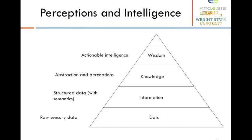This is called the DIKW triangle. D stands for Data, I stands for Information, K stands for Knowledge, and W stands for Wisdom.